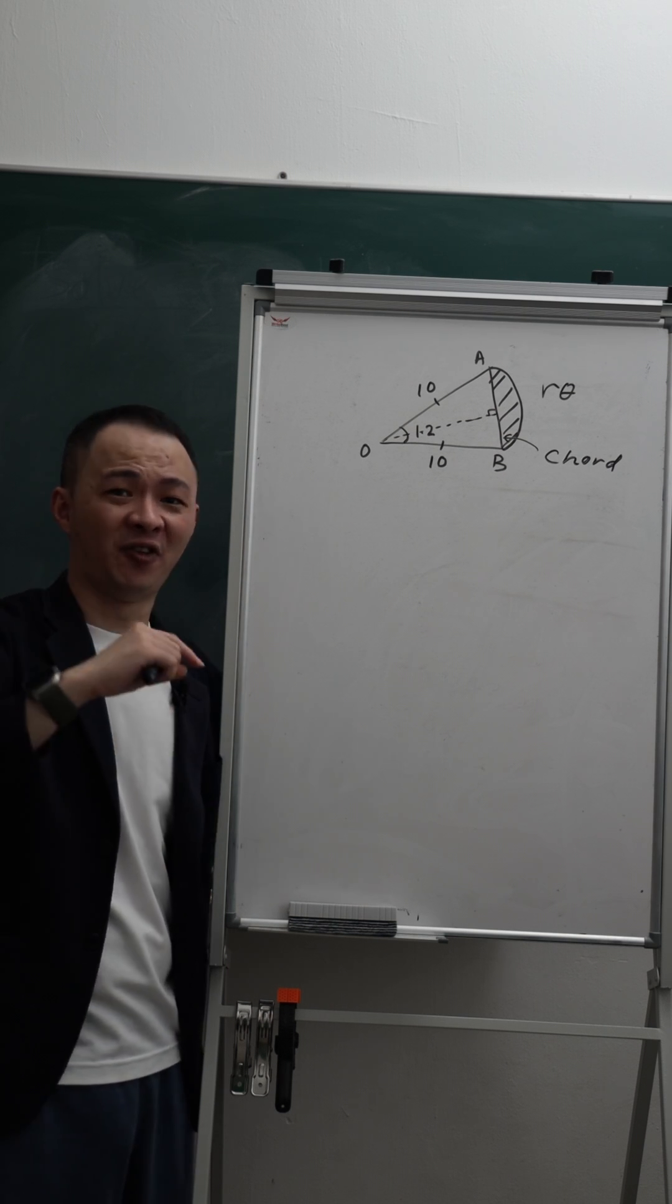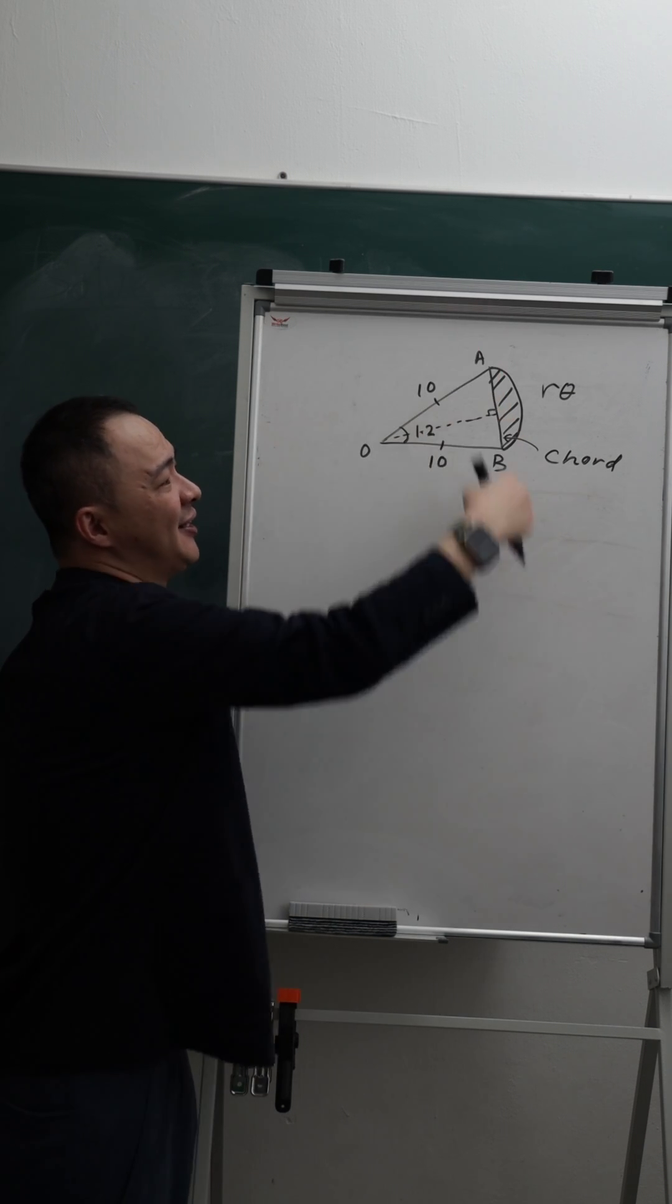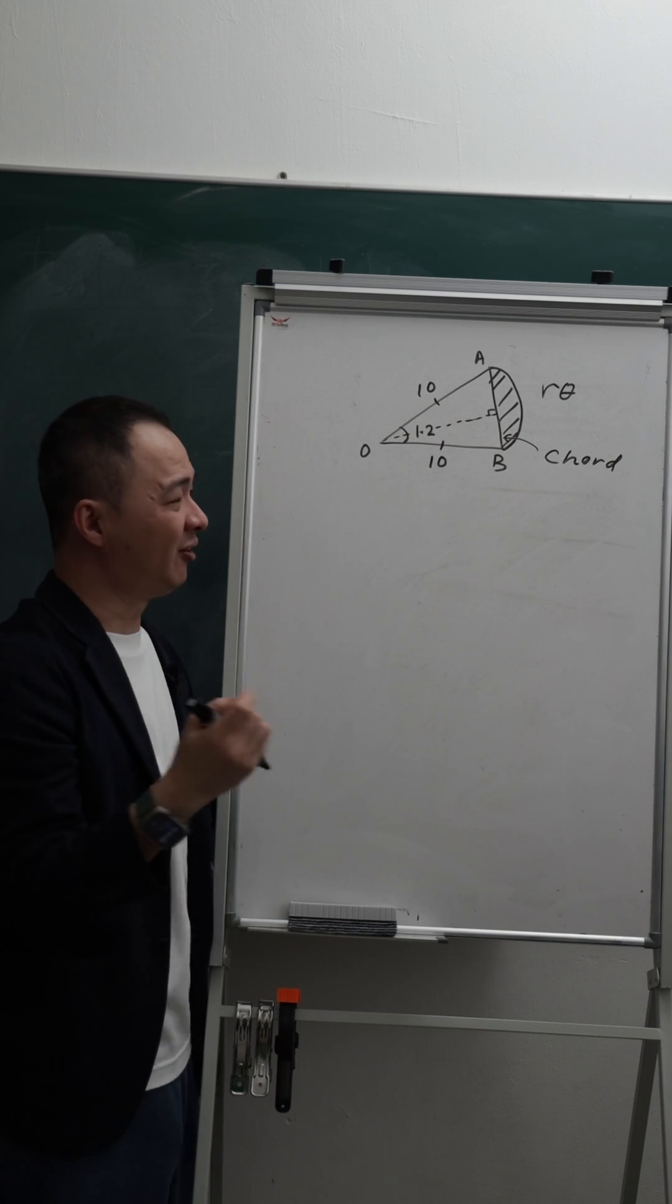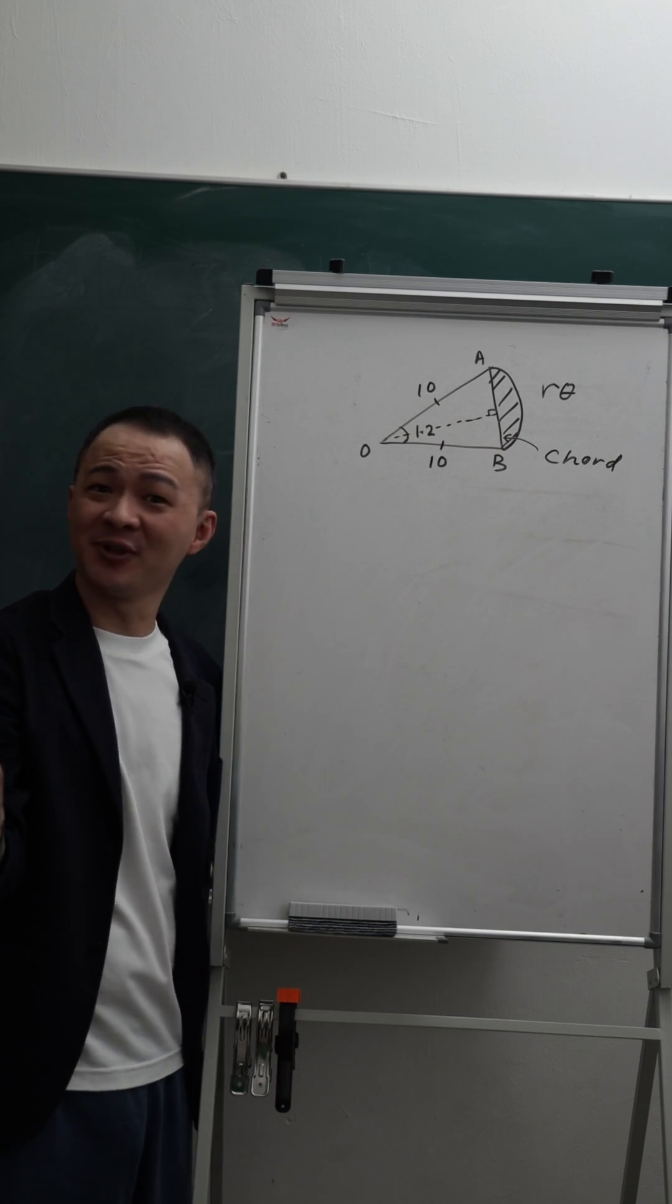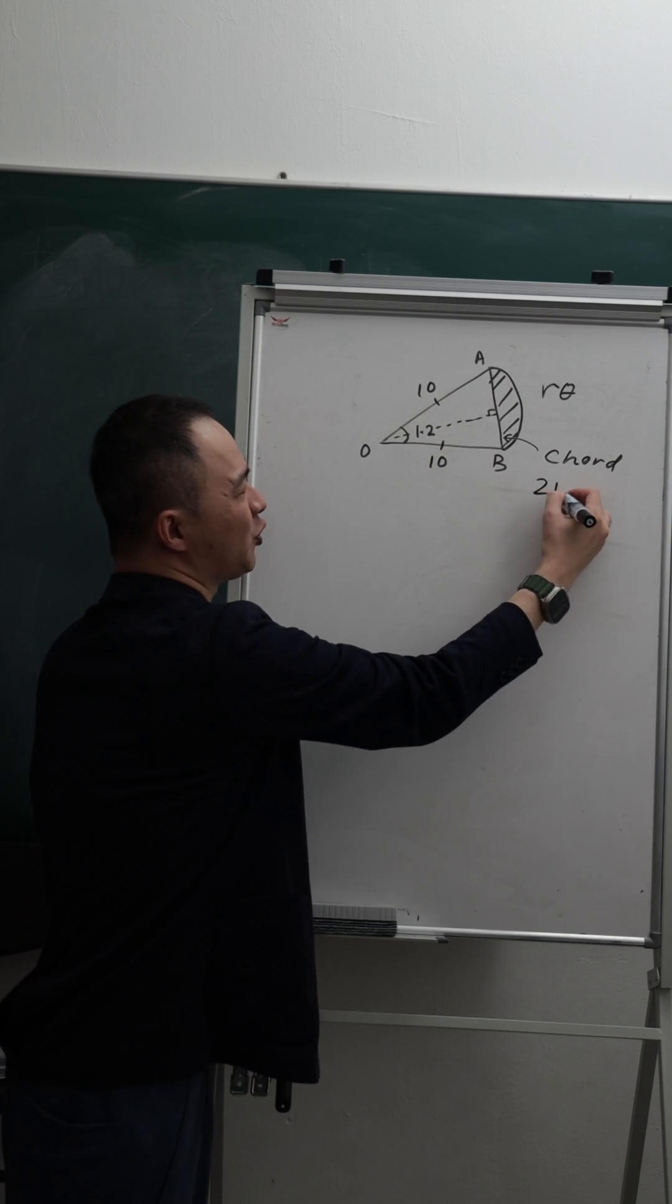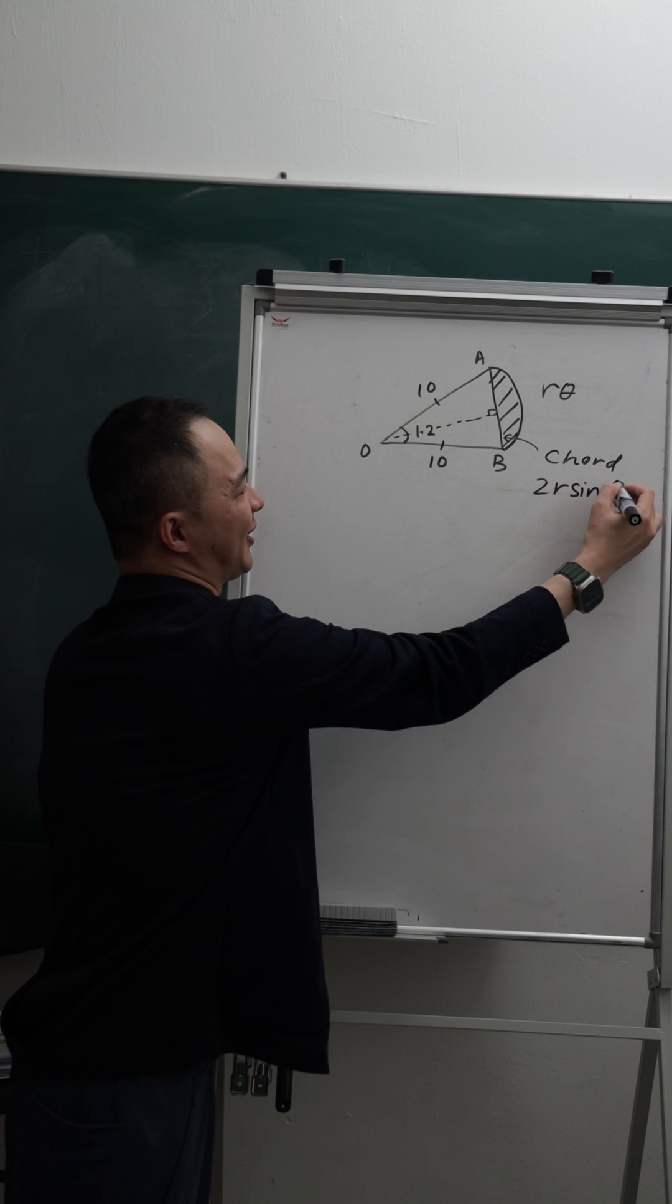But over here, I teach you a formula we can straight away find the chord AB, which is the formula is not that long, but then you need to memorize something new. The formula for chord is basically 2R sine theta over 2.